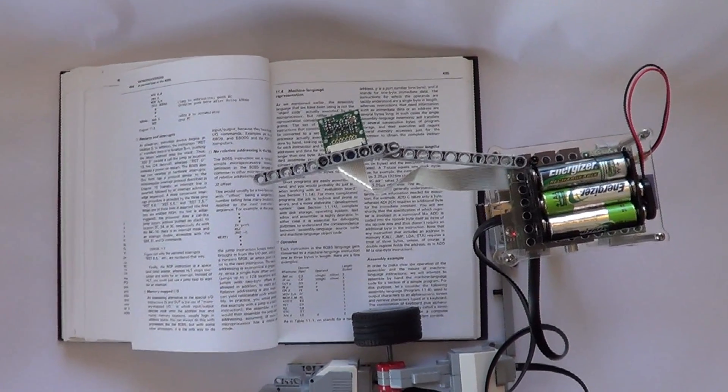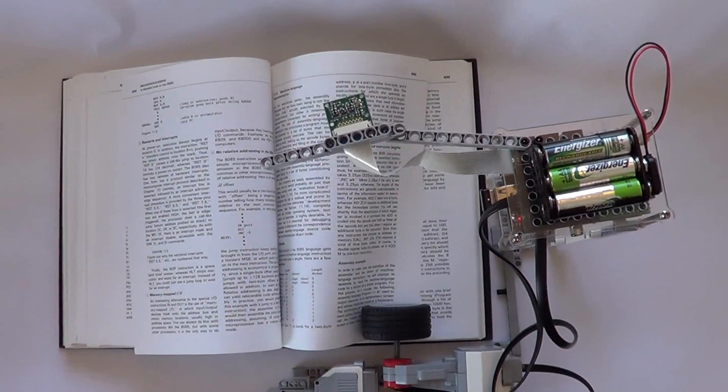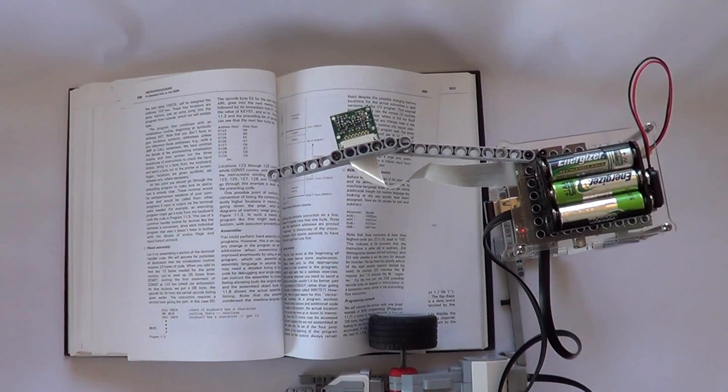We even connected the BrickPi to Wi-Fi so we could push the book up to Google Docs as we read it. Once the page is read and stored, the Raspberry Pi, through the BrickPi, turns to the next page of the book.